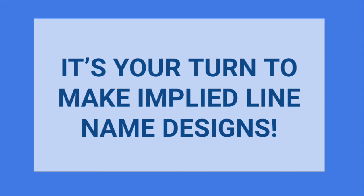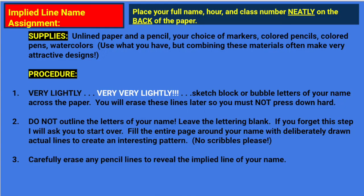I hope you're ready to begin your own implied line name designs. First, place your full name, hour, and class number neatly on the back of your paper so I can identify whose grade it is. The supplies you'll need are unlined paper — we do not use notebook paper for art. If you're at home and that's all you have, try the inside of a cereal box or food container, as they often have white interiors you can draw on. You'll also need a pencil and an eraser, because the pencil lines will be erased. Then your choice of markers, colored pencils, colored pens, watercolors — use whatever you have.